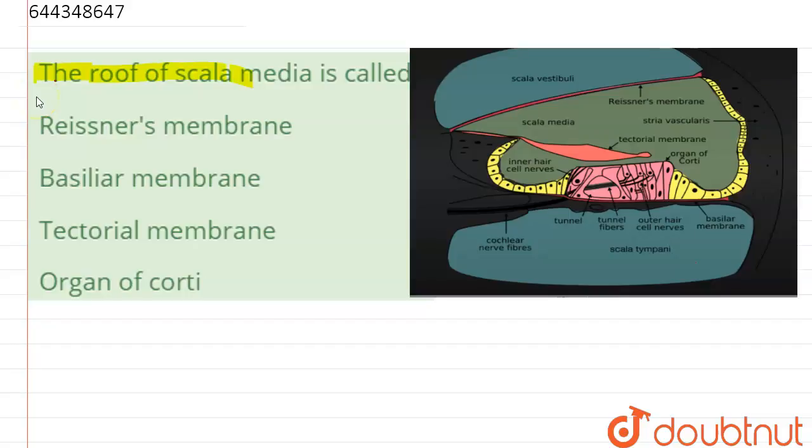That the roof of scala media is called... Options we have: Reissner's membrane, basilar membrane, tectorial membrane, and the organ of Corti. Now the very first option...